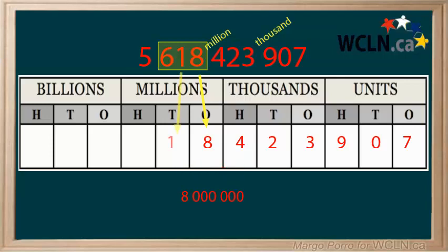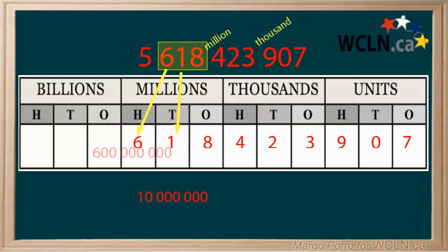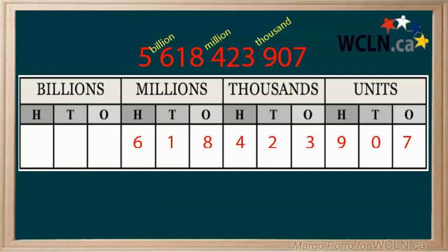The digit one fits in the ten millions place on the chart. It has a value of ten million. The six is worth 600 million, and the largest digit in this number, shown by being furthest to the left, is five billions — it's the tenth digit to the left, starting with the ones. What is the value of five billion? Five followed by nine zeros.